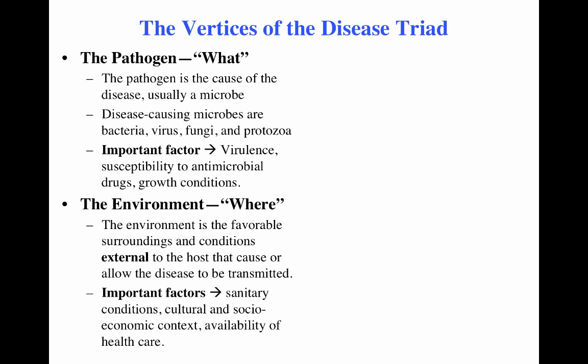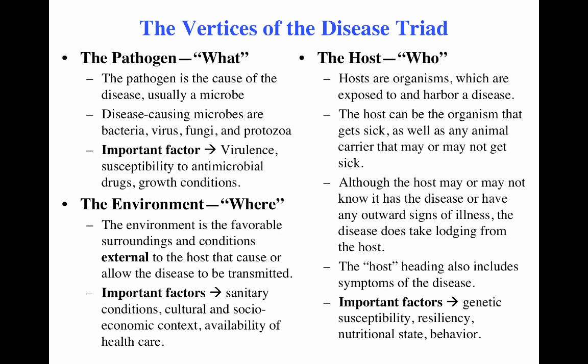The environment is where disease is happening — the surrounding conditions external to the host that can allow disease to progress or be transmitted. This includes where we live: for example, here in the Central Valley of California you're unlikely to be exposed to dengue fever because it occurs in tropical environments. Socioeconomic conditions also matter — access to healthcare, sanitary conditions, and whether people live in extreme poverty are all part of the environment.